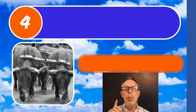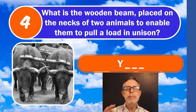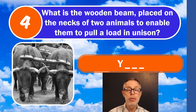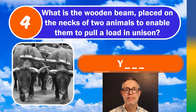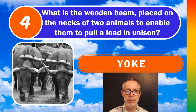Let's move on to question number four. What is the name for the wooden beam placed on the necks of two animals to enable them to pull a load in unison? The answer is Yoke. You will see a yoke across there too next.